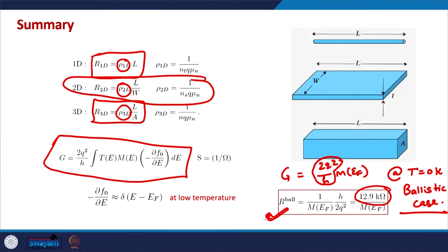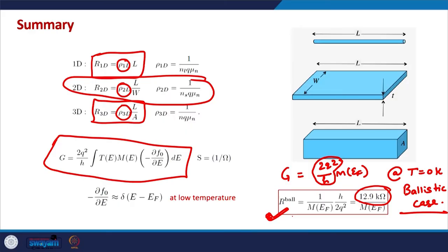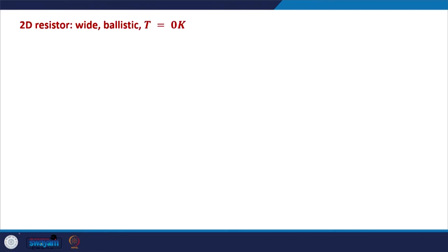That is why in our modern nanoscale devices we can no longer use the conventional understanding of electron transport. We need a fundamentally different theory of transport, and that is what we are doing in this course. We are currently studying resistance in a ballistic conductor at 0 Kelvin, but now for a wide conductor — that is where our discussion was stopped in the last class.